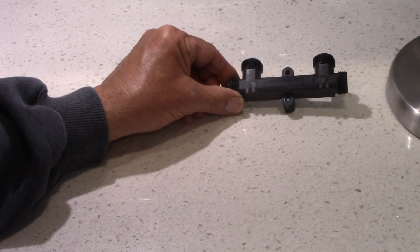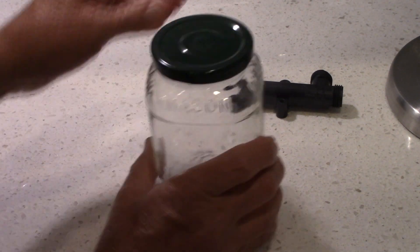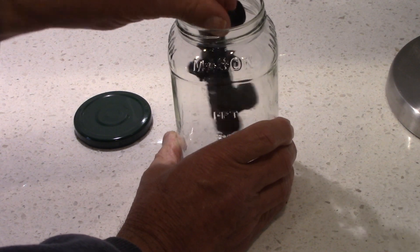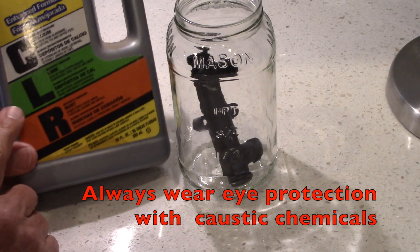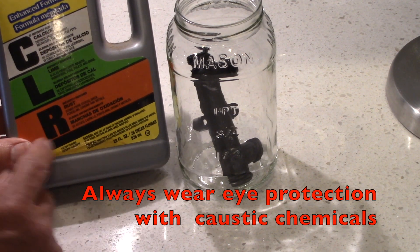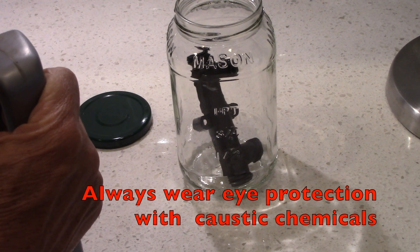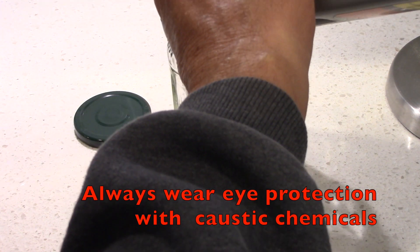You can simply take a jar like this, drop the unit inside, and get yourself some of this CLR product. It's supposed to break down calcium deposits and it's really a kind of moderately strong acid. Just pour it in this jar.